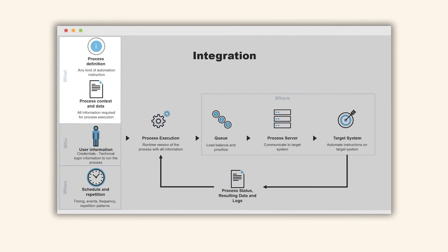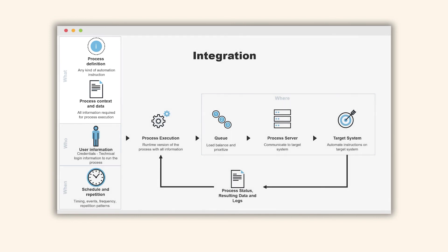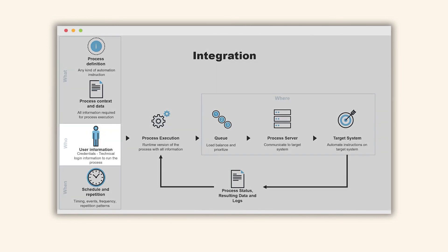Secondly, the who. This relates to the user information, credentials and security profile of the user that is going to submit the automation. We then have the when, which connects the what and the who and specifies any timings, real-time event or file triggers, completion of another process, and frequency and repetition of the workload if applicable.